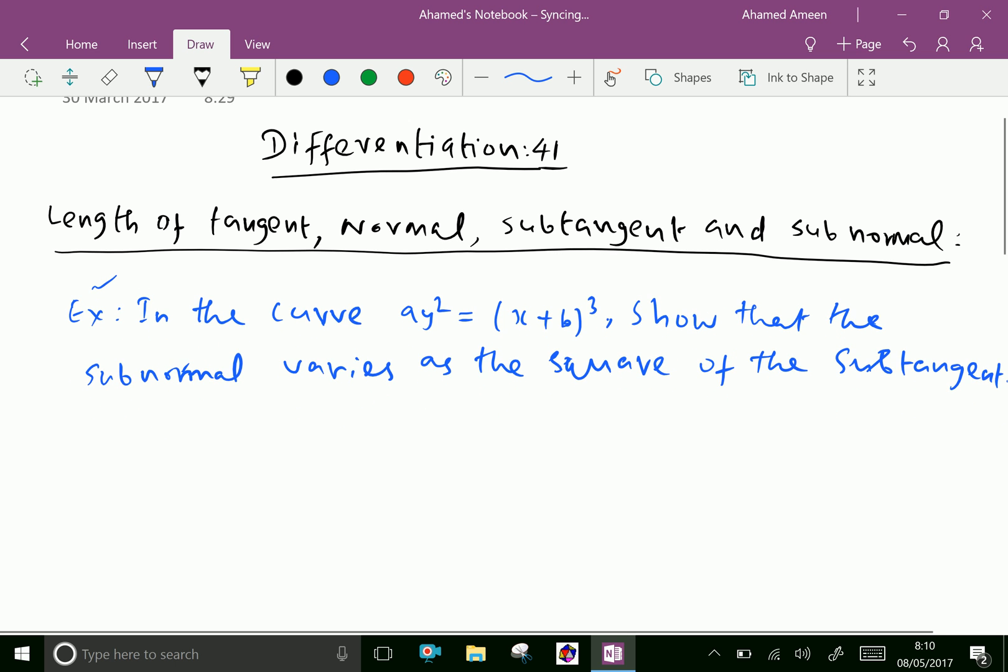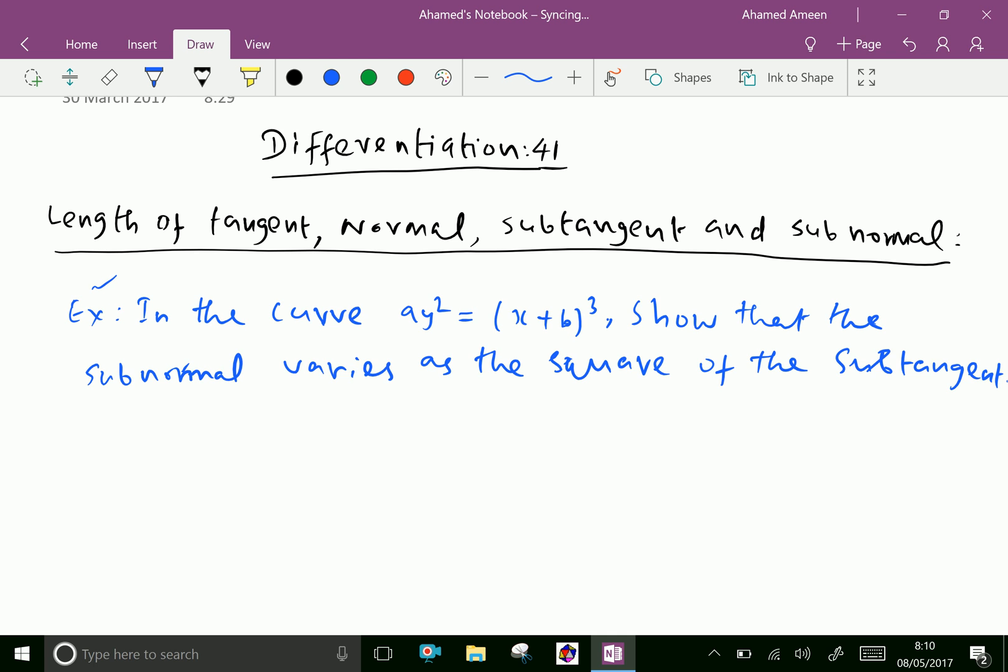In the curve ay² = (x+b)³, show that the subnormal varies as the square of subtangent.